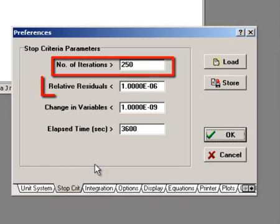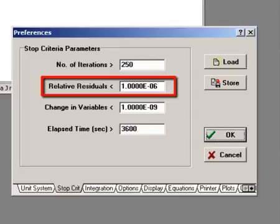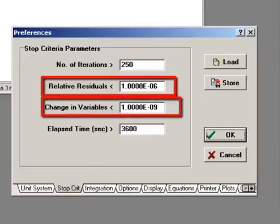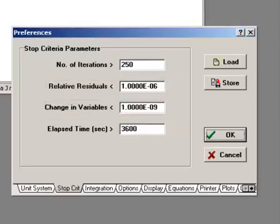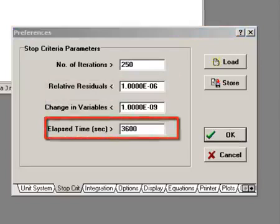or alternatively, we could monitor the absolute value of the residuals, or the absolute values of the change in the independent variables between iterations, and stop the process whenever one of these indicators becomes smaller than a specified tolerance. Finally, we could also specify a maximum value of elapsed time.